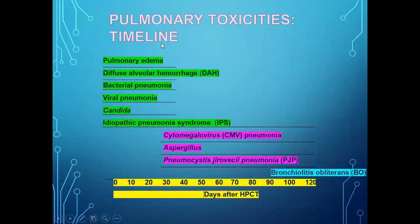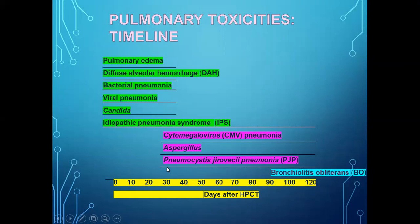This image shows a timeline of when infections may occur. From day 0 to day 30: pulmonary edema, diffuse alveolar hemorrhage, bacterial pneumonia, viral, Candida, and idiopathic pneumonia syndrome. From day 30 to day 90: patients are prone to CMV (cytomegalovirus) activation, CMV pneumonia, Aspergillus, and PJP (Pneumocystis jirovecii pneumonia). From day 90 to day 120: bronchiolitis obliterans.